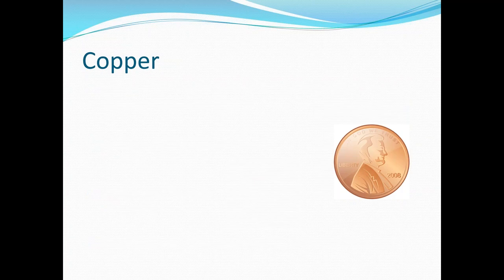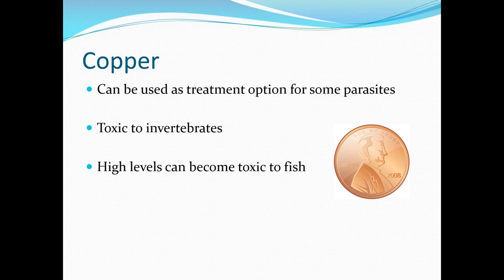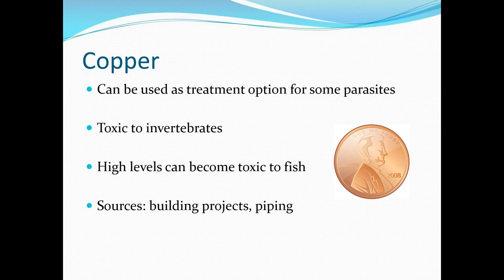Now we're on to the not-so-fun components of water quality. First is copper. Copper can be used as a treatment option for some parasites — copper sulfate is the most common form, it's a blue color. However, this is toxic to invertebrates; if you have any corals, shrimp, crabs, or crustaceans, they will die from copper treatment. High and chronic levels can become toxic to fish as well, with signs of general malaise, lethargy, and inappetence. This is important for ponds open to the public, as people will throw coins into fish ponds. Any building projects, roofing, or gutters near your pond can also introduce copper shreds. Old systems might have copper piping that also needs to be removed.